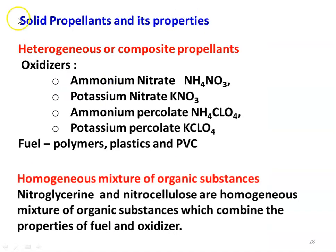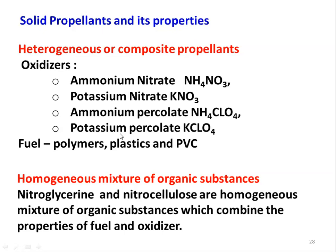There are two types of solid propellant: heterogeneous (composite) propellant or a homogeneous mixture of organic substances. In heterogeneous propellant, there is a separate oxidizer and fuel. Different oxidizers include ammonium nitrate, potassium nitrate, ammonium perchlorate, and potassium perchlorate. Fuels are polymers, plastics, and PVC. For homogeneous mixtures, nitroglycerin and nitrocellulose combine the properties of fuel and oxidizer. When combustion is initiated, they split into fuel and oxidizer and burning takes place.